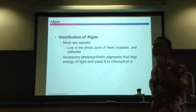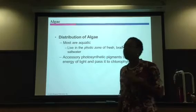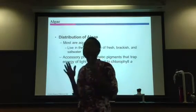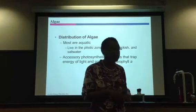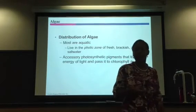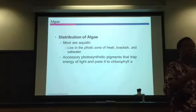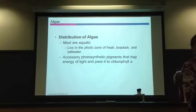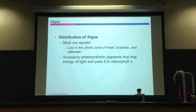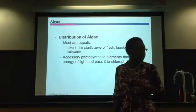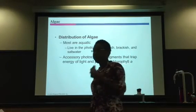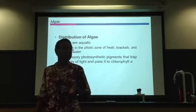The zygomycota make zygospores when they do sexual reproduction. Ascomycota make ascospores, basidiomycota make basidiospores. There is one group of fungi that, as of right now, we don't know how they do sexual reproduction — the deuteromycetes. Our example was Candida albicans, basically the yeast that causes yeast infection and thrush if it's in the mouth.